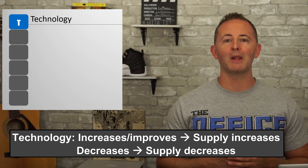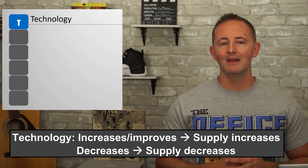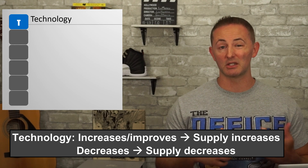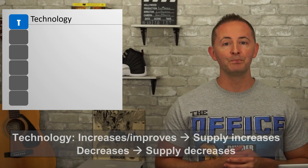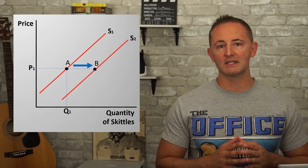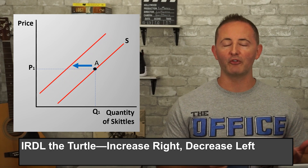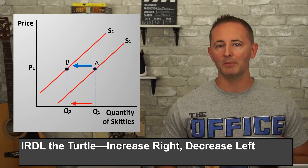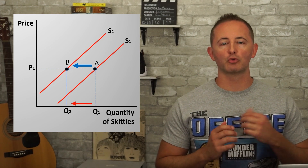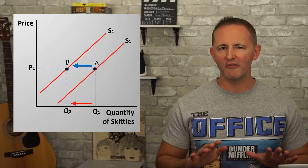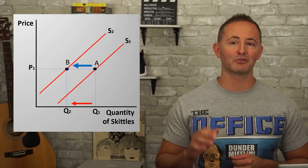If technology improves, supply increases because it's now possible to make more of the good or service. If technology decreases — which typically means it gets destroyed because of something like war or natural disasters — supply will decrease. Just like with demand, we show an increase in supply by shifting the supply curve to the right, and a decrease shifts it to the left. So Ertel the Turtle applies here too: increase right, decrease left. Always shift these curves right and left — don't think of it as up and down, otherwise it can trick you into shifting the wrong direction.